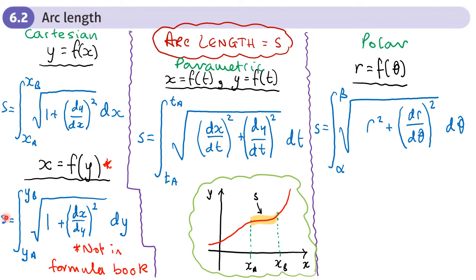Moving on to parametric equations, where x is a function of t and y is a function of t, the limits are going to be the t values. We differentiate each part — finding dx/dt and dy/dt — square them, add them together, find the square root, and integrate with respect to t. So where the Cartesian form has one plus (dy/dx)², the parametric form has (dx/dt)² plus (dy/dt)².